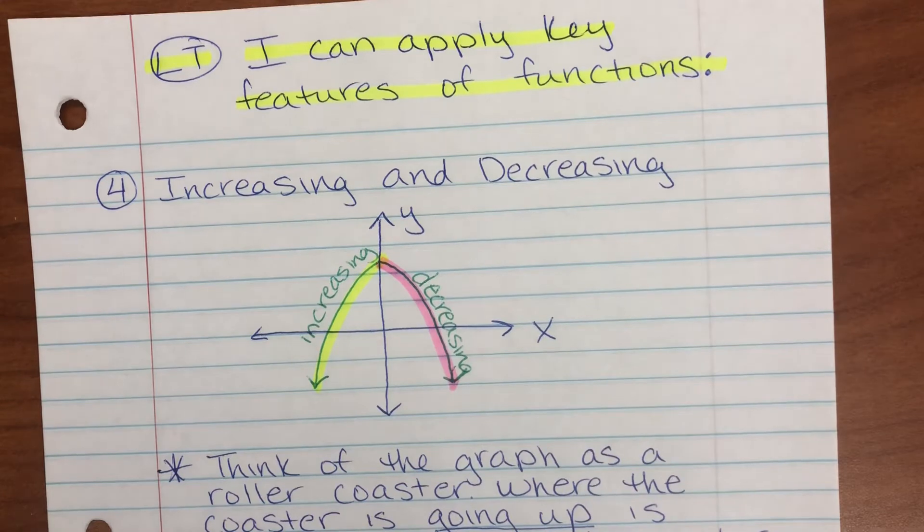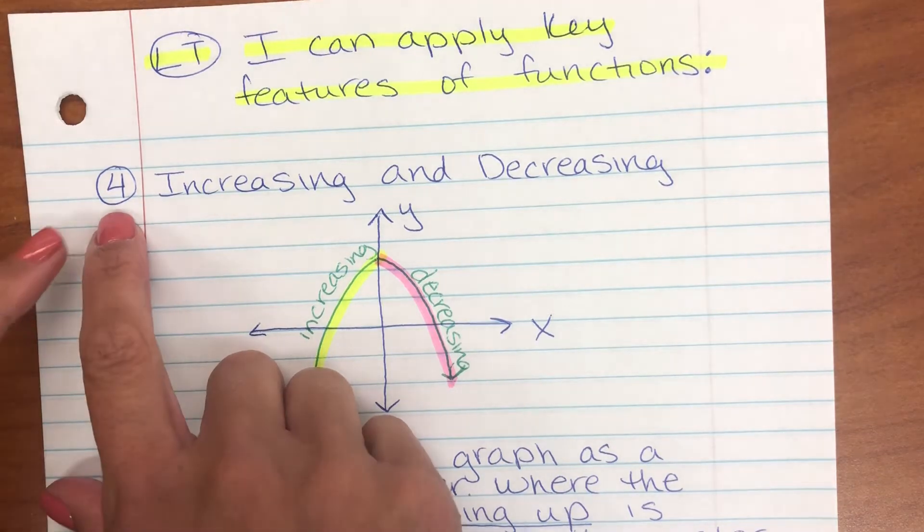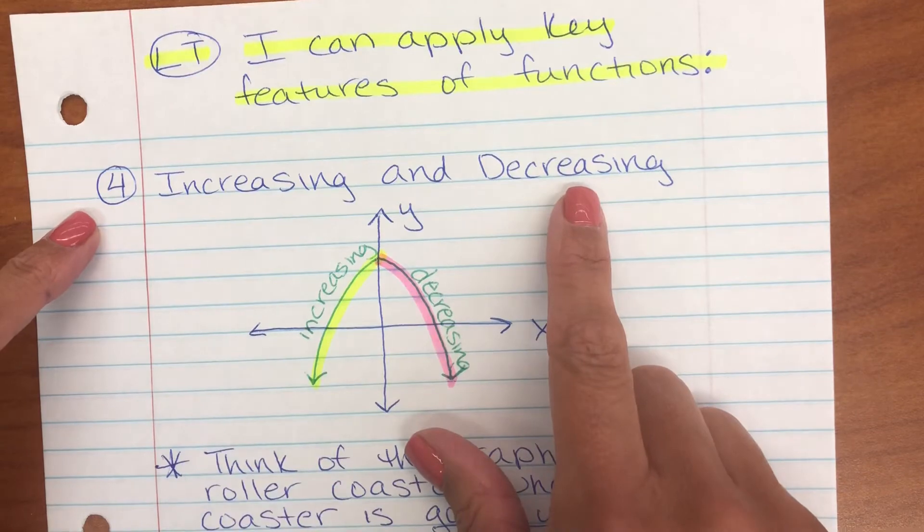So far in section 1.1, we have talked about domain and range, x and y intercepts, and positive and negative intervals. We're on the fourth key function, and the feature for today is increasing and decreasing intervals.